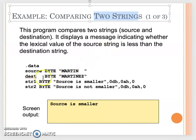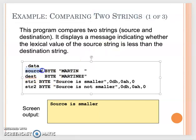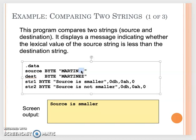So that's why here when we want to compare two byte arrays, two strings — the source is 'Martin' and the destination is 'Martinez'. You will see here, we on purpose leave two spaces after 'Martin'. The reason is we really want to use COMP SB.